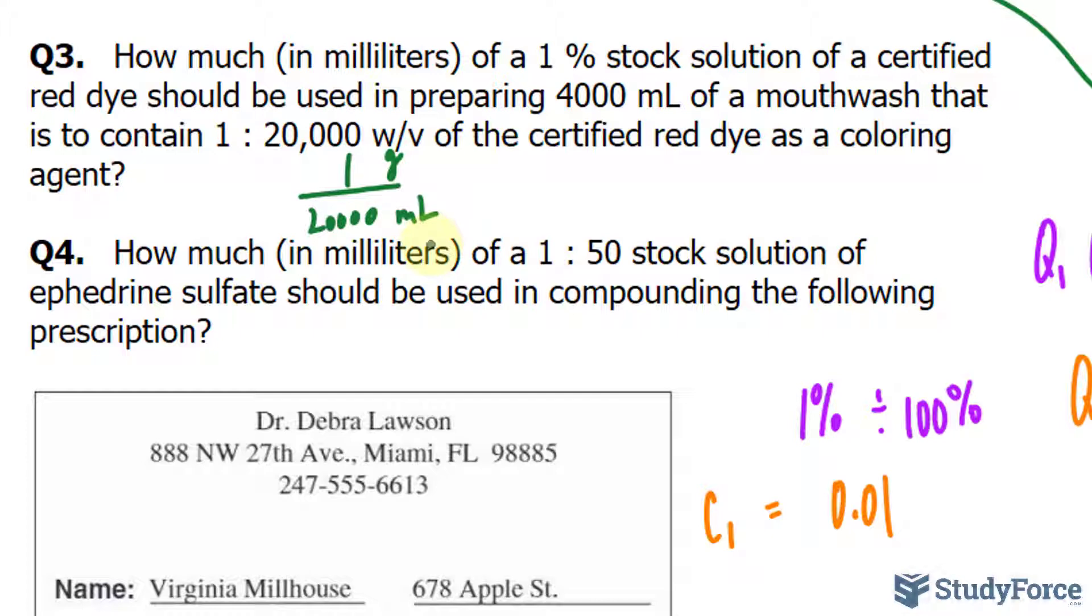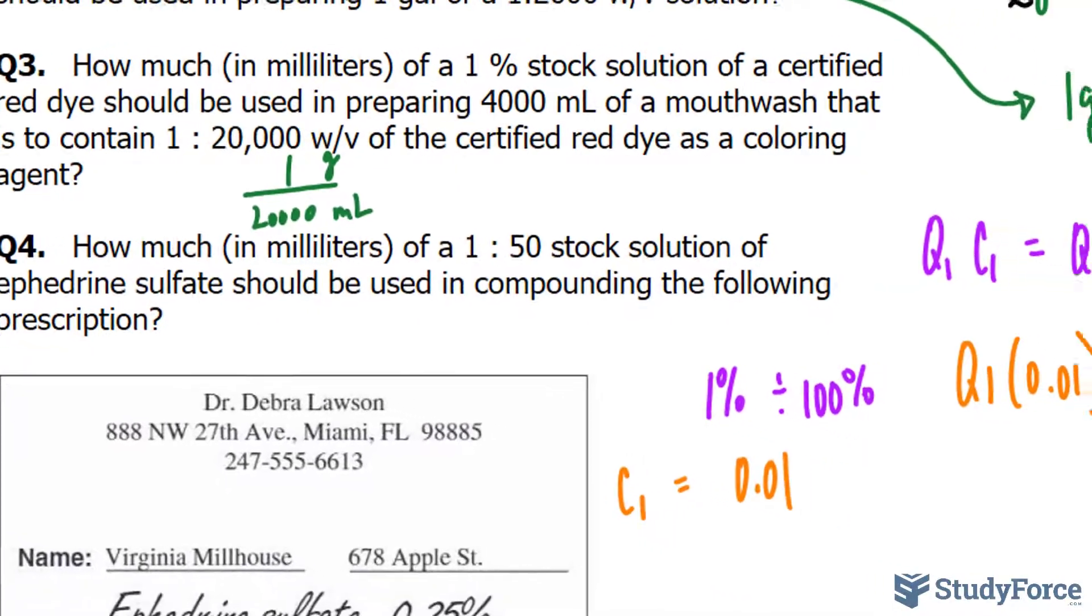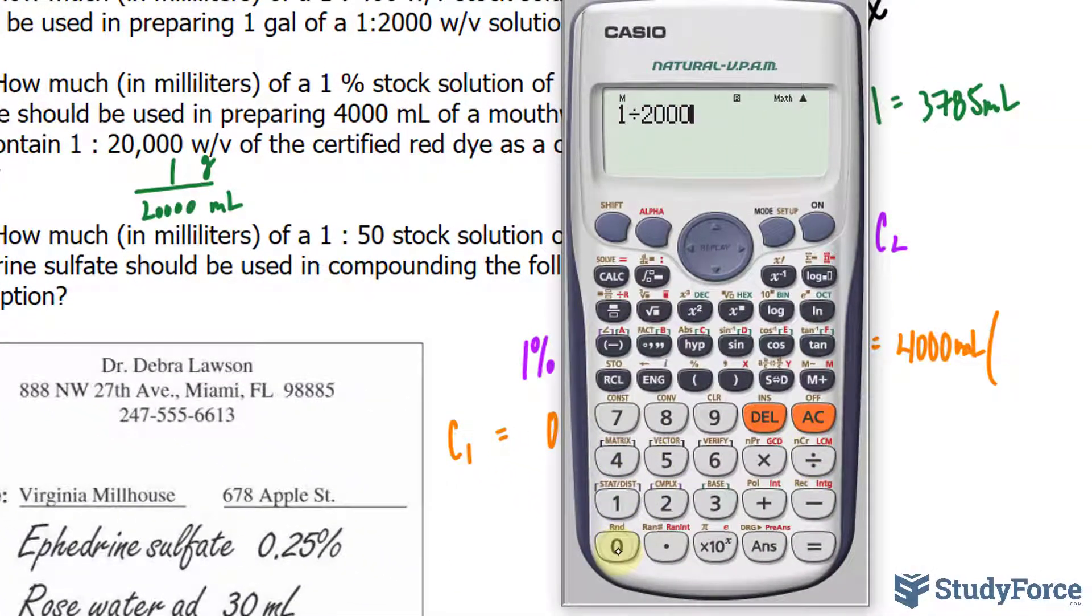We haven't been told specifically what the units are for the weight, but assuming that it's in grams it would be 1 over 20,000. Anyway, what you do now is you find out what that is as a decimal, so 1 divided by 20,000.